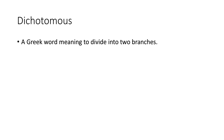Dichotomous is a Greek word meaning to divide into two branches. You can think of it as driving down a road — you come to a stop and you have two choices: you can turn left or you can turn right.